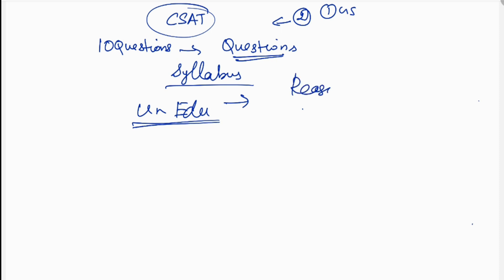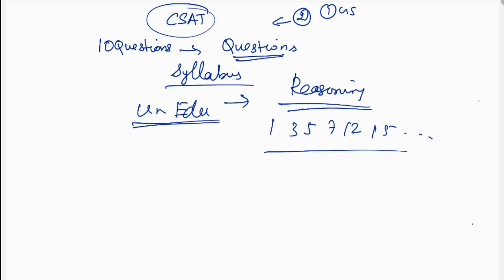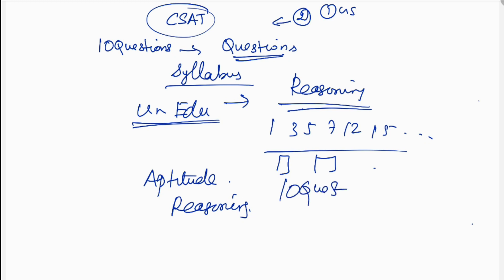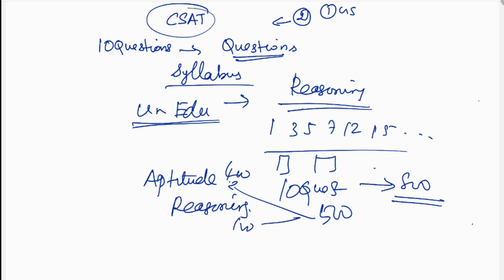For the reasoning part, you can answer any questions. You can aim to answer 12 to 15 questions correctly. The key focus should be on aptitude and reasoning, as these are easy to score and easy to pass.